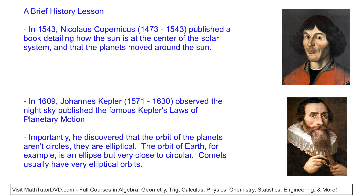On our way to understanding how orbits work, I want to talk about a brief history — it's really fascinating how humanity figured this stuff out. In 1543, a really important person, Nicholas Copernicus, published a book explaining how the Sun was at the center of the solar system and that the planets actually moved around the Sun. This was a mind-blowing idea because before this time, everyone assumed the Earth was the center of everything. Copernicus, along with a few contemporaries, started to formulate this idea that the Sun was actually at the center — they didn't totally understand all the math involved, but they suspected it.